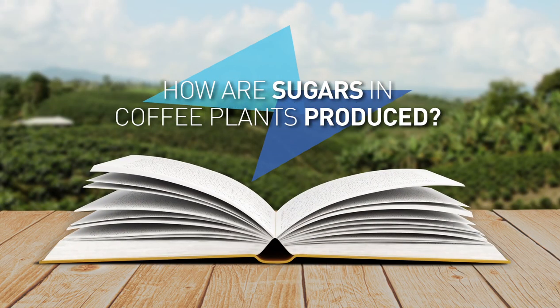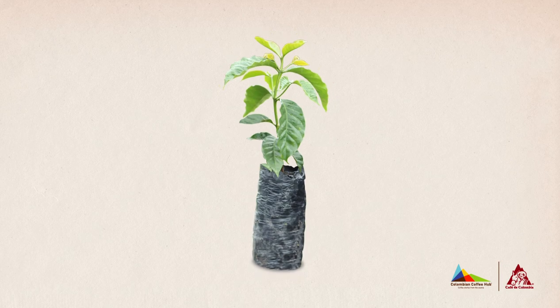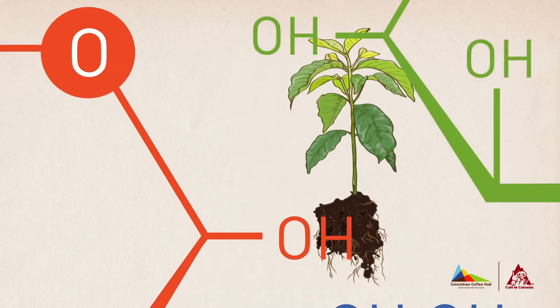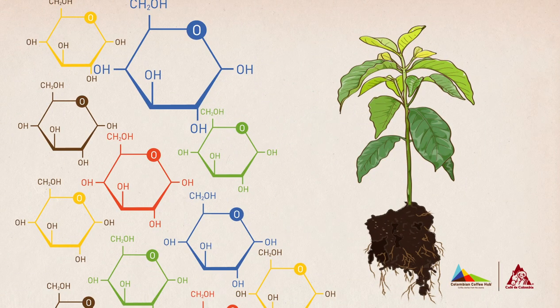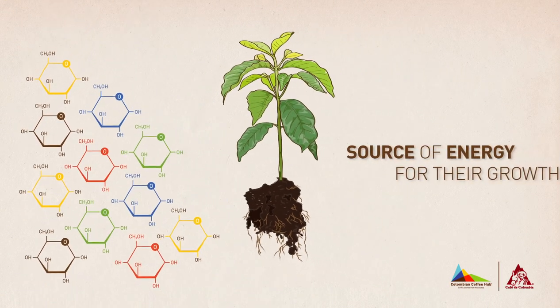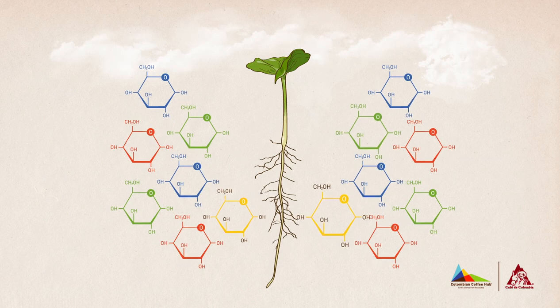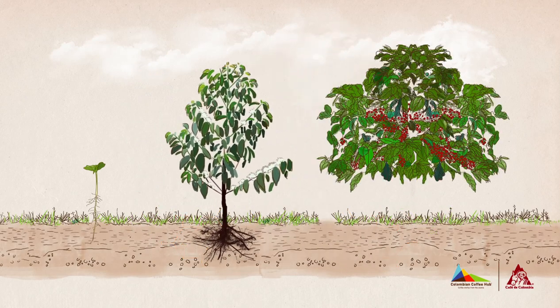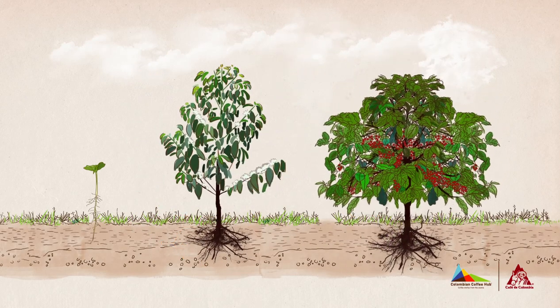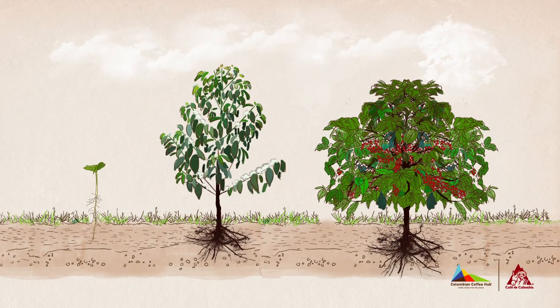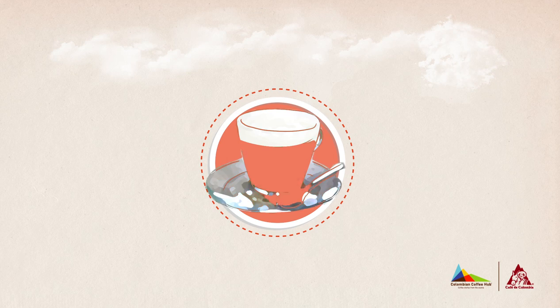How are sugars in coffee plants produced? Plants have the capacity to produce sugars and other chemical compounds, which serve them as a source of energy for their growth. In the case of coffee plants, these accumulated sugars promote the development of sweetness in cherries, which is later reflected in the sweet notes of the cup profile.